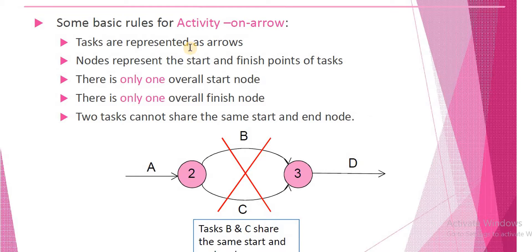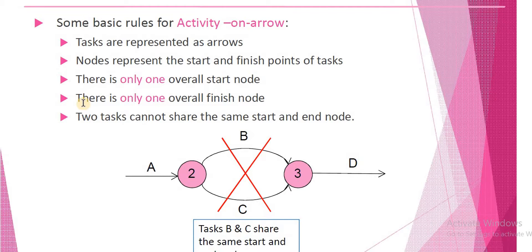The basic rules for activity on arrow diagrams are: tasks are represented as arrows. In the activity on arrow diagram, we use arrows to represent activities. There is only one overall start node and there is only one overall finish node. A very important characteristic is that two tasks cannot share the same start and end node.